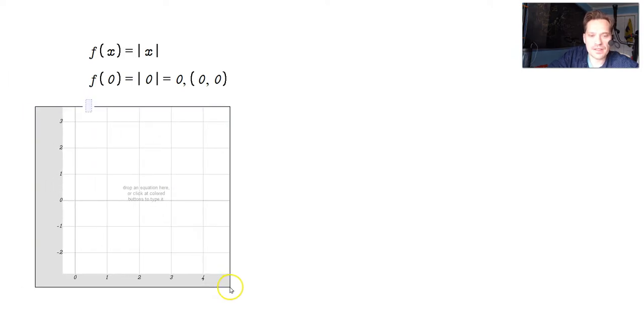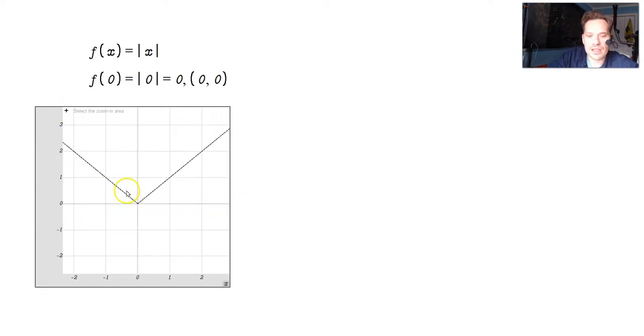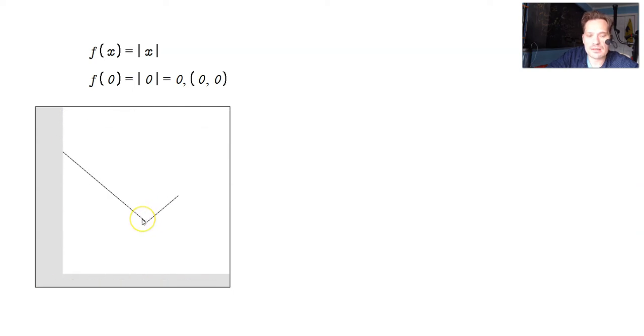Let's do a graph here of this function and study something closely. When we do the absolute value of x, notice something important. When I zoom in around the origin, which is where the kink is, it doesn't matter how closely you zoom in. The slope on the left side is always negative 1. The slope on the right side is always positive 1.